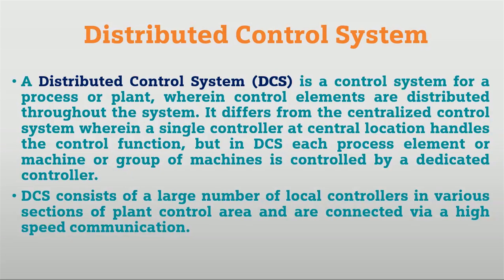DCS consists of a large number of local controls, and all controls have different communication protocols. So it can be Profibus DP, Profibus PA, or it can be industrial Ethernet or Profinet.